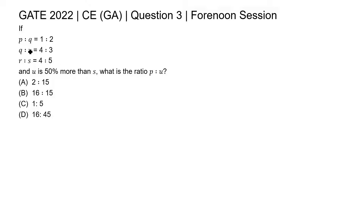In this question, a few ratios are given and one condition is also given. We need to find the ratio of P is to U. For finding the ratio of P is to U, we must know the value of P and U.